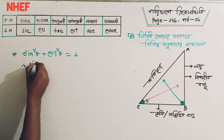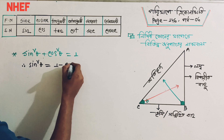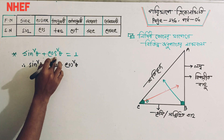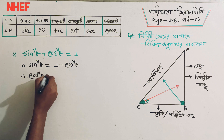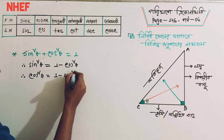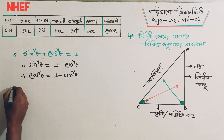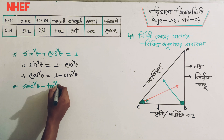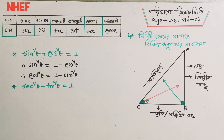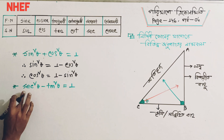So, sin²θ plus cos²θ is 1 minus cos²θ. So, cos²θ equals 1 minus sin²θ. So, sin²θ plus cos²θ equals 1 minus sin²θ plus cos²θ.